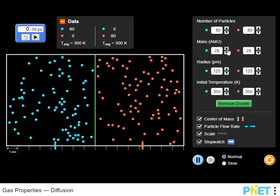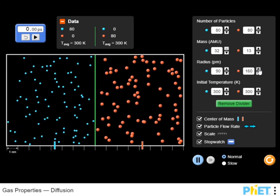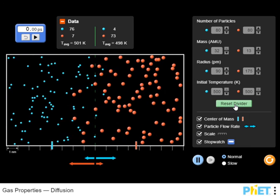You can also add additional settings to monitor the center of mass, particle flow rate, scale and use of the stopwatch to monitor time.